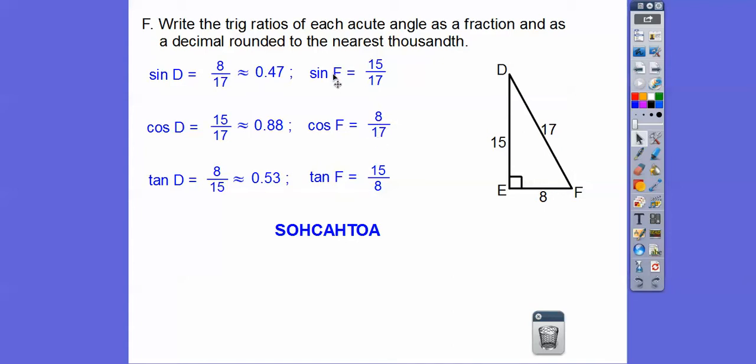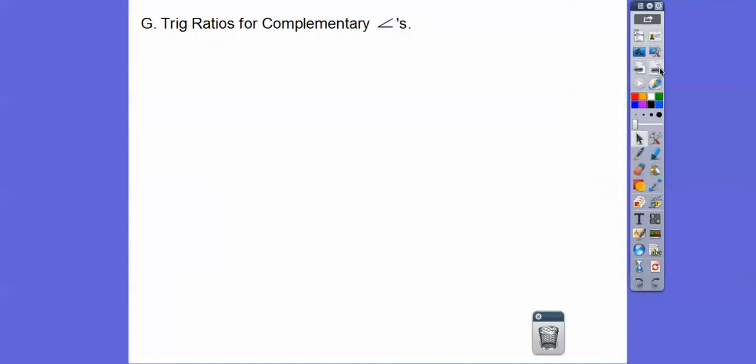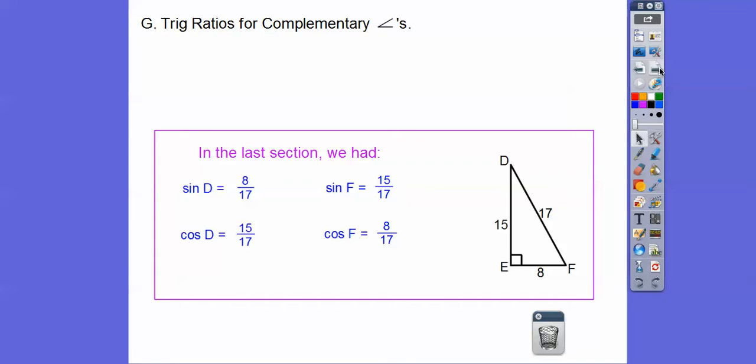The sine of this acute angle F, which is 15 over 17, is the same as the cosine of the other acute angle. Remember, these acute angles are complementary. They add up to 90, these two guys, because that's 90 and the whole triangle is 180. So if we take out that 90, then that means these two guys are going to be the rest of the triangle, which is 90. And there's the decimals of those.